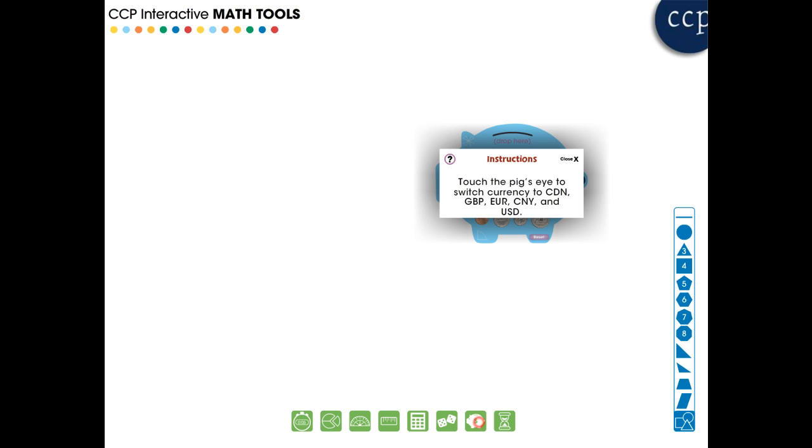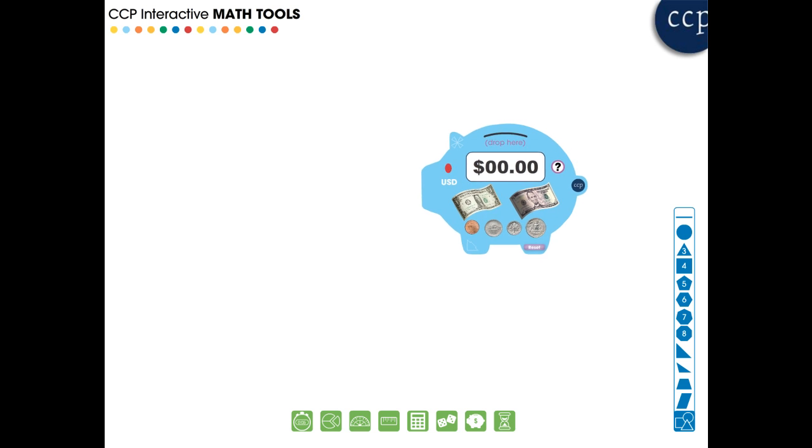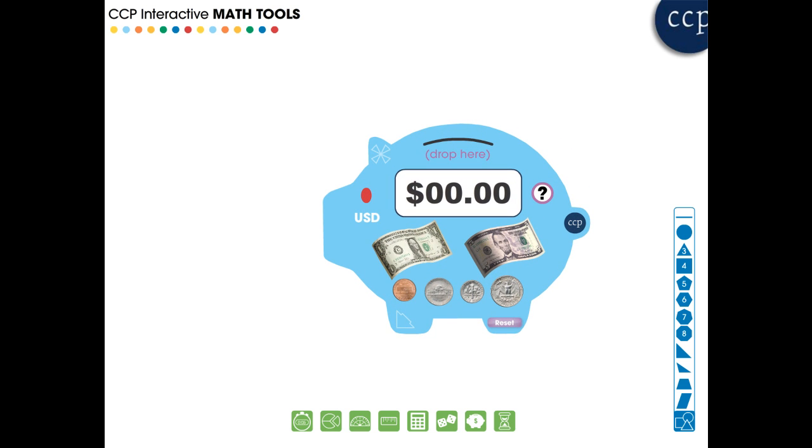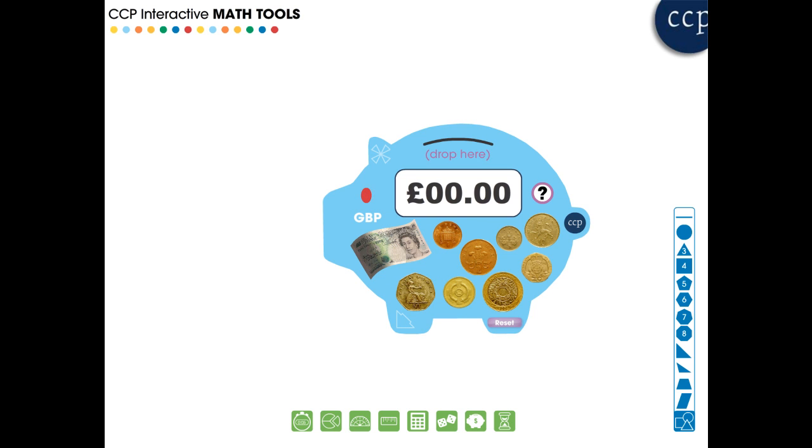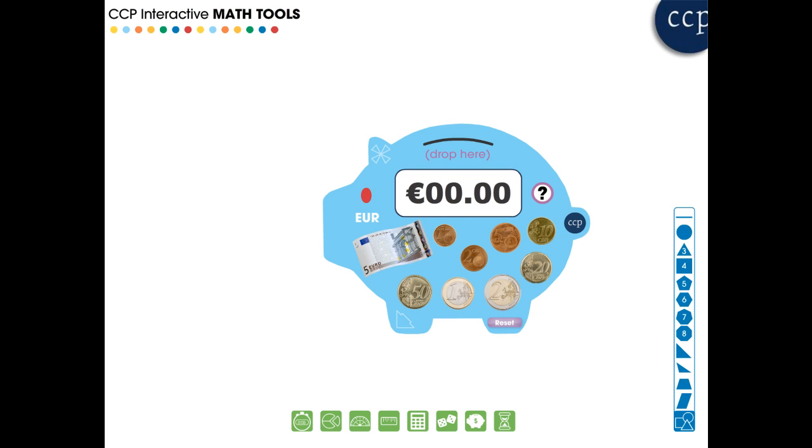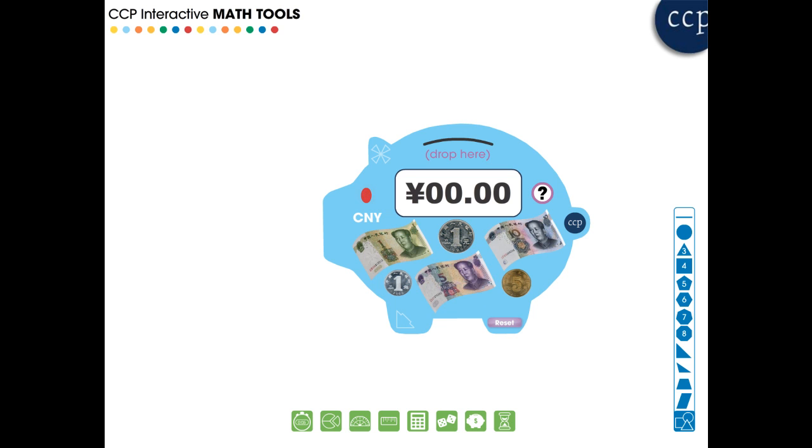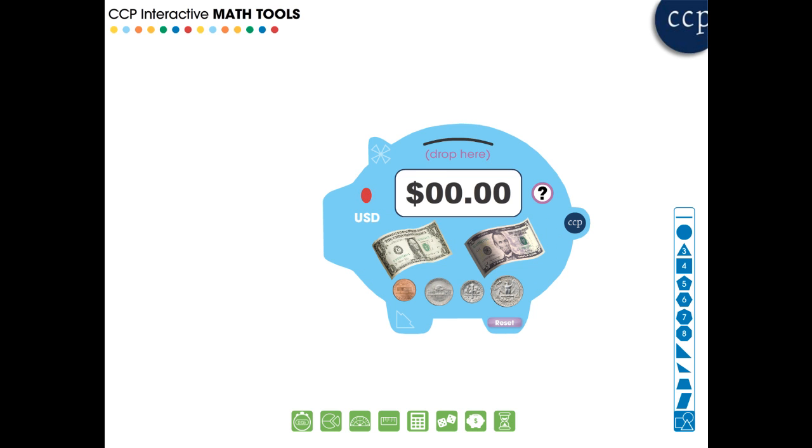The money counter tool is a great way to teach students about different kinds of currency. Choose a currency: either American or Canadian dollars, Great British Pound, European Union Euro, and Chinese Yen. Have students calculate the different values of currency by dragging them to the piggy bank.